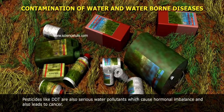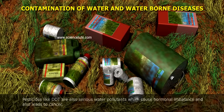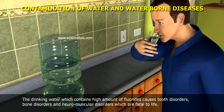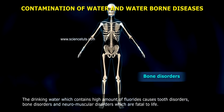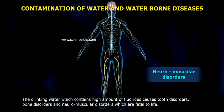Pesticides like DDT are also serious water pollutants which cause hormonal imbalance and can lead to cancer. Drinking water which contains high amounts of fluorides causes tooth disorders, bone disorders, and neuromuscular disorders, which are fatal to life.